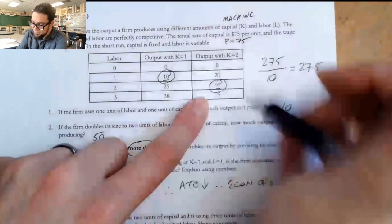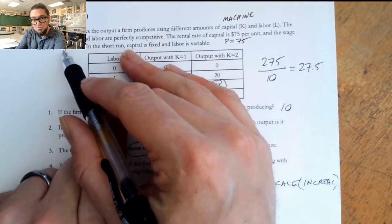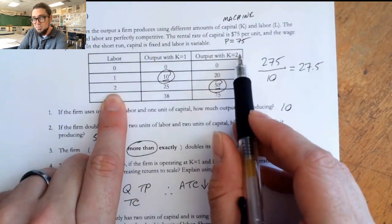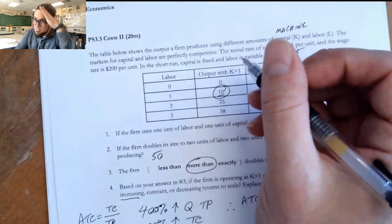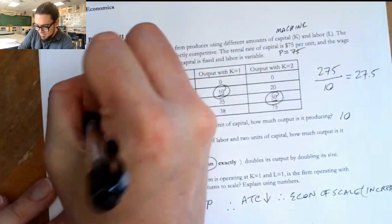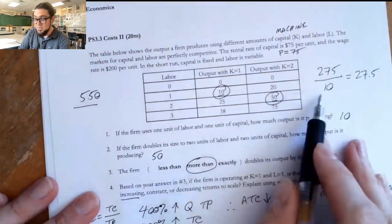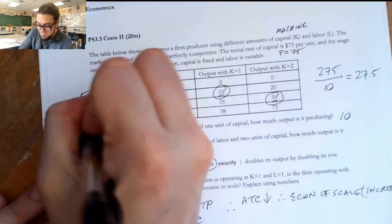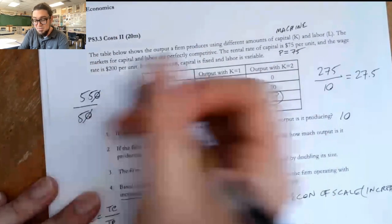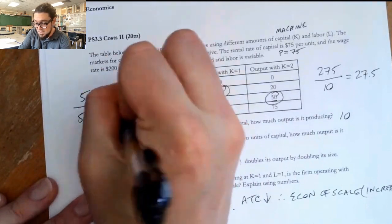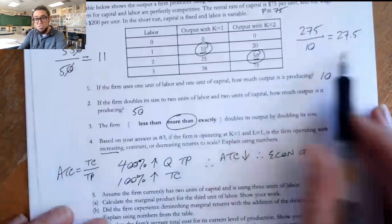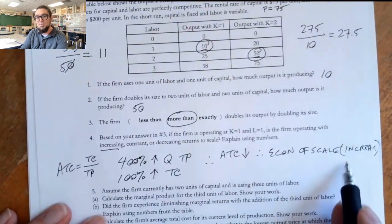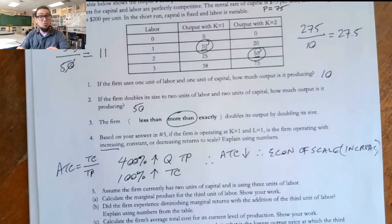But when we move to here, you go two workers and two machines. So two workers would be $400 and two machines is $150. $400 plus $150 is $550. $550 divided by the total product is 50. So 55 over 5 is $11. So right there, you can see the ATC went down. It went from $27.50 to $11, which is why we actually are in the economies of scale, increasing returns to scale range because that ATC value went down as we scaled up the operations.